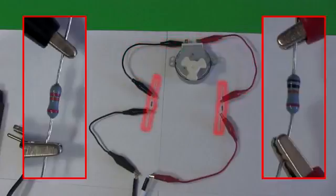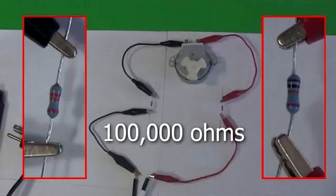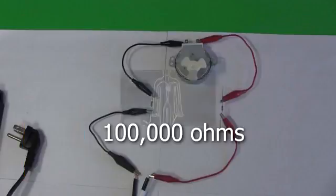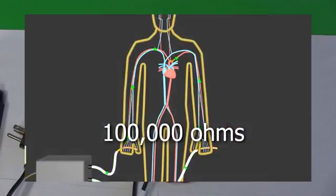These wires are the blood vessels, and these resistors are the dead skin that provides most of the resistance to the flow of current. The values of these resistors add up to 100,000 ohms. That's the same resistance that a body with dry skin has.